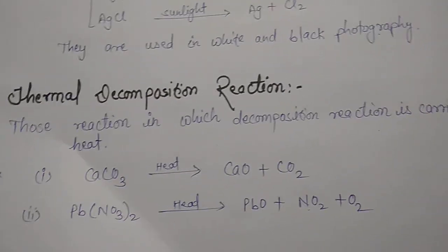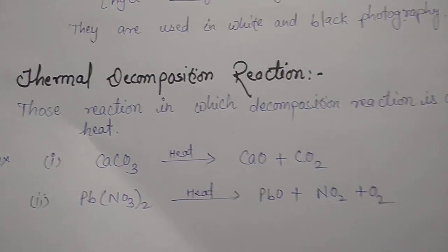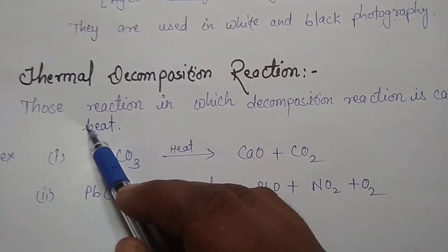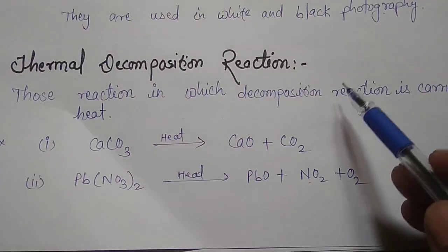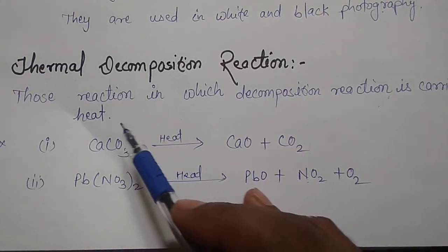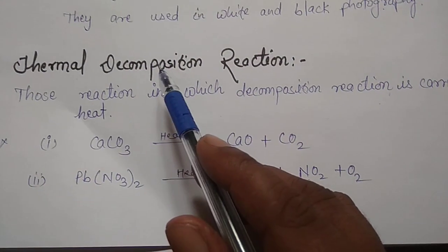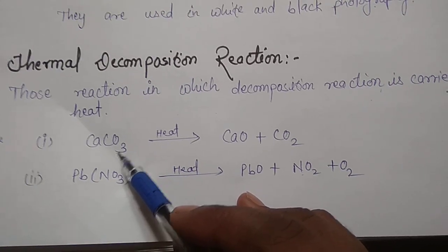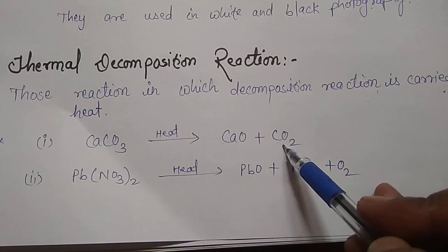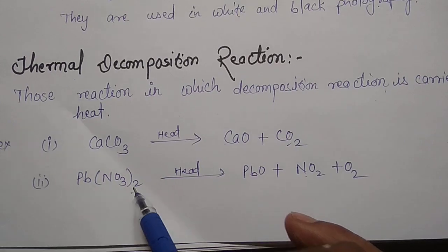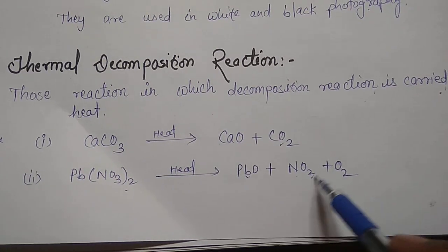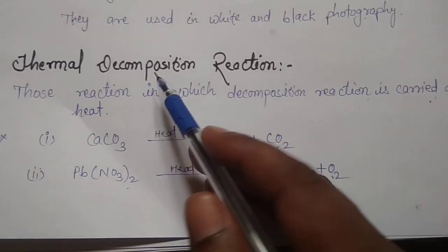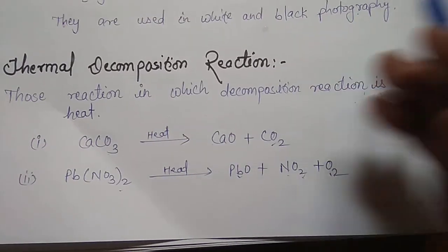Now, thermal decomposition reaction. Thermal means temperature or heat. Those reactions in which decomposition is carried out by heat are known as thermal decomposition reactions. For example: calcium carbonate gives calcium oxide plus carbon dioxide; lead nitrate gives lead oxide plus nitrogen dioxide plus oxygen gas — if they are carried out by heat, that will be a thermal decomposition reaction.